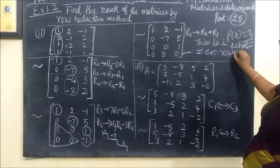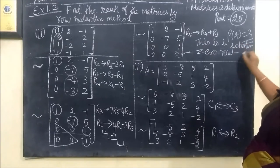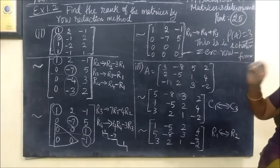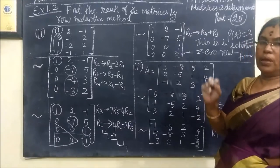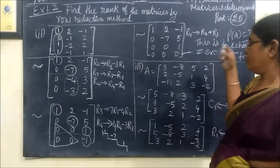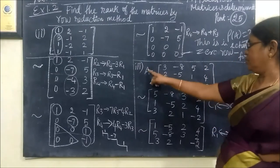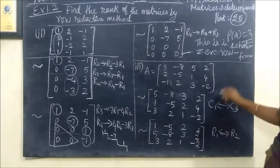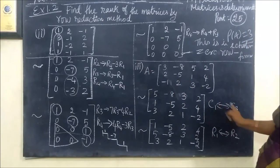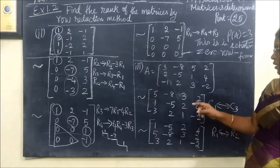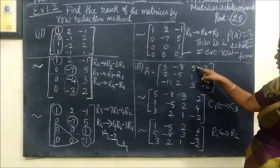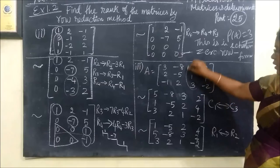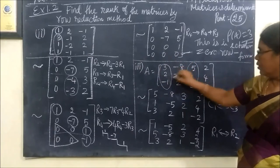This is in row equivalent form — the row echelon equivalent form. There are three non-zero rows. Therefore, rank of E equals 3. For convenience, we are changing C1 and C3 — interchanging columns C1 and C3.